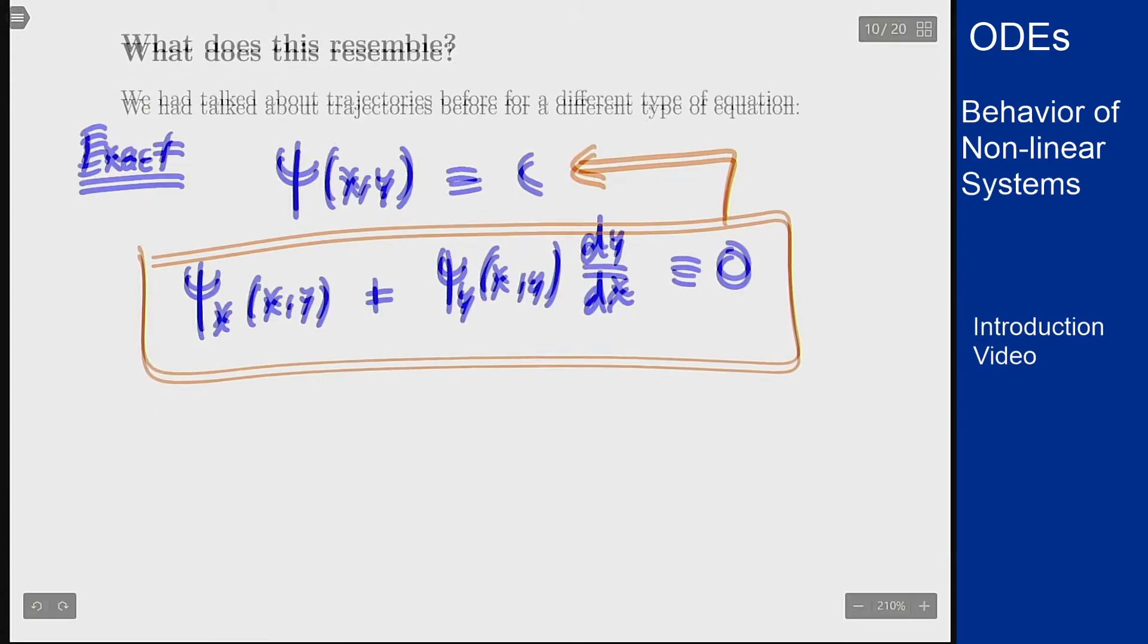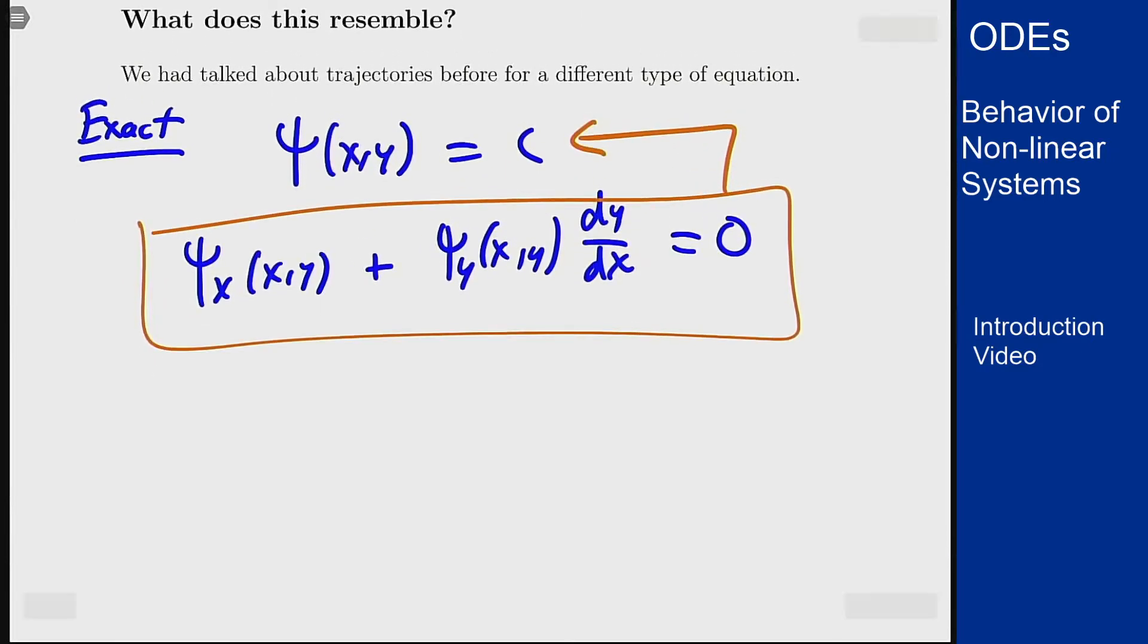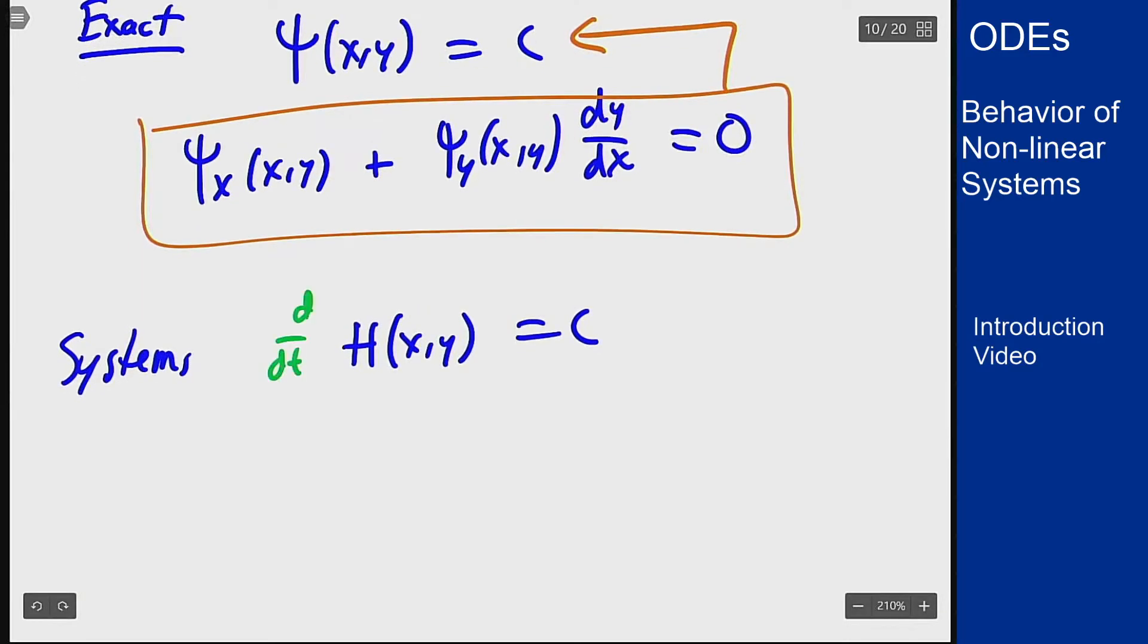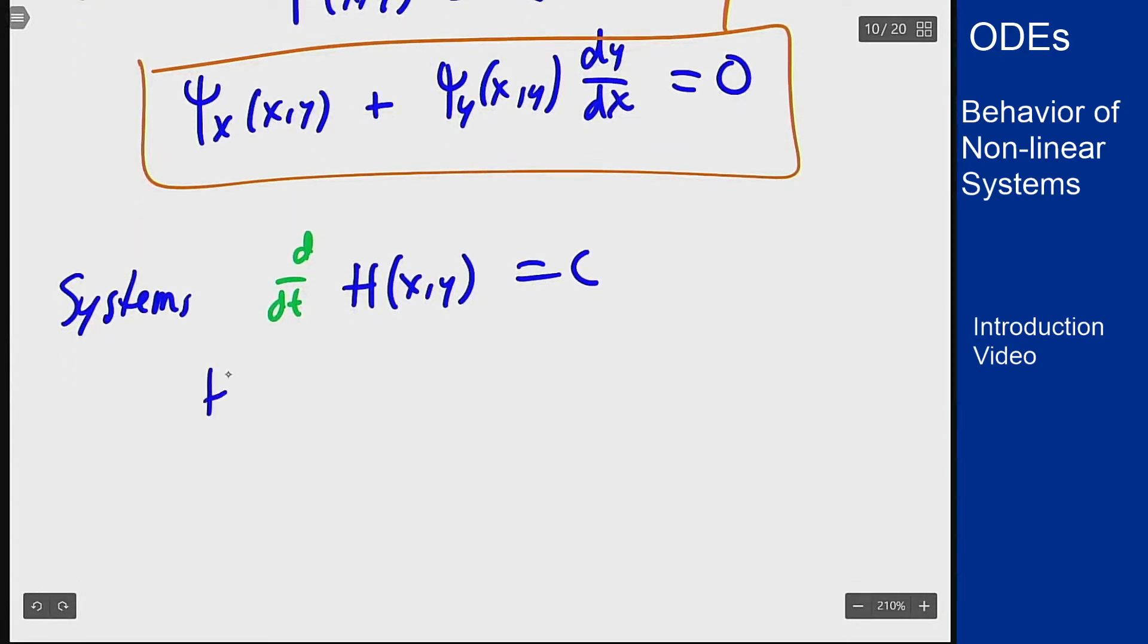So what is the idea? Well, the idea is that if I have a function H(x,y) that I want to be constant, I can differentiate this expression now in t instead of in x. If I differentiate this in t I'm going to get H_x times dx/dt plus H_y times dy/dt equaling zero.